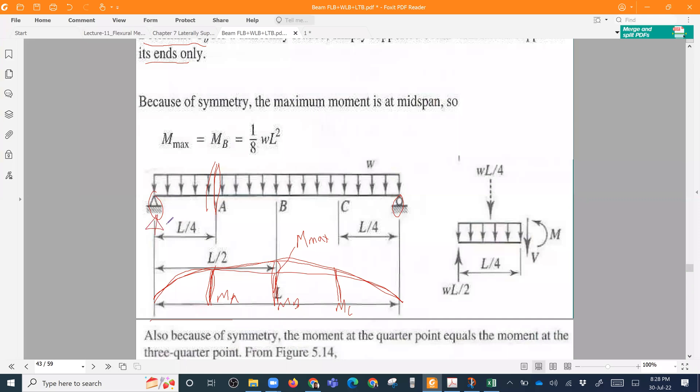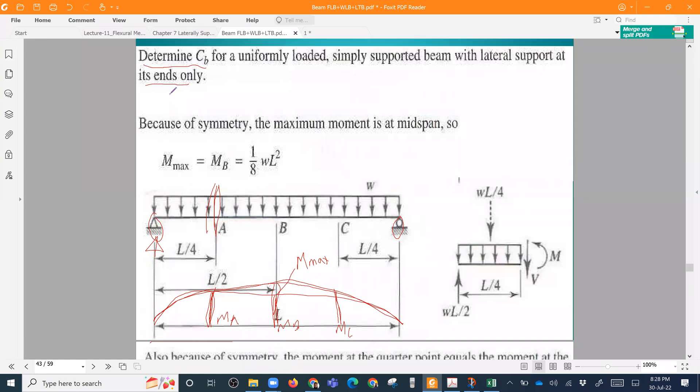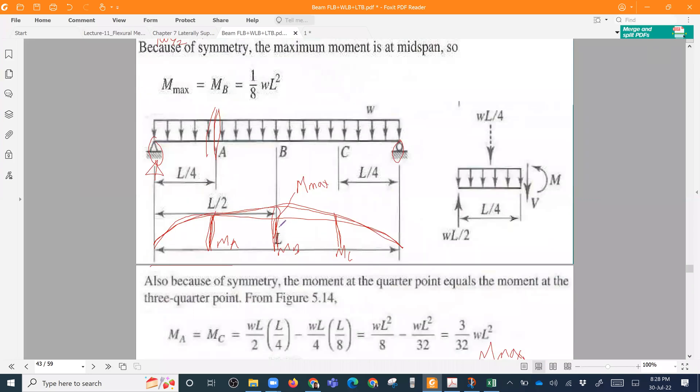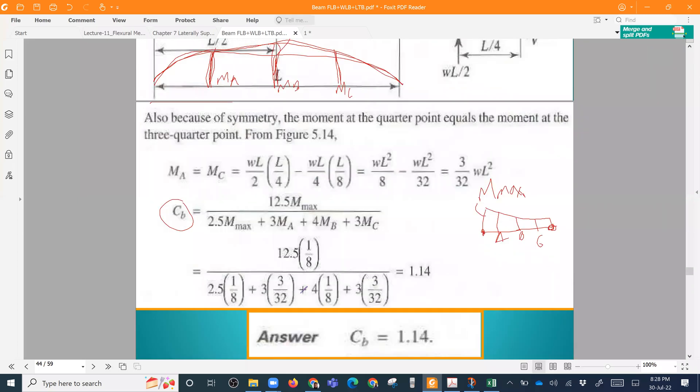This reaction is W L by 2. This reaction is W L by 2. So we can find out this moment diagram. This moment diagram is W L square by 8. M max is W L square by 8.